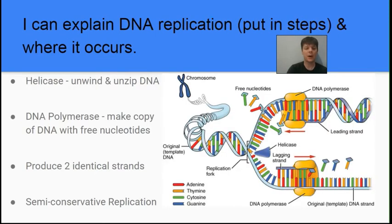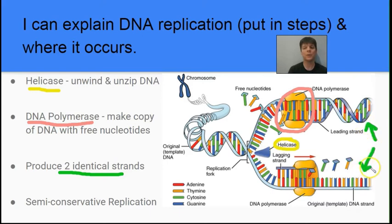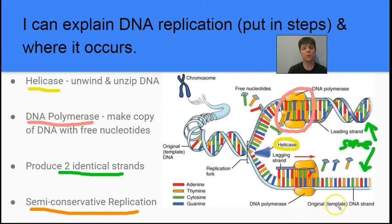Our next learning target is to explain the process of DNA replication — the steps of this process and where it occurs. In eukaryotic cells, this occurs in the nucleus because that is the location of the chromosomes. There are important enzymes involved: helicase, which unwinds and unzips the DNA (circled in yellow), and DNA polymerase (highlighted in pink), which is the enzyme that copies the DNA. The copying process produces two identical strands because of the complementary base pairing rules — adenine always pairs with thymine, guanine always pairs with cytosine. This process is semi-conservative, meaning the two new strands each contain half of the old strand and half newly synthesized DNA.